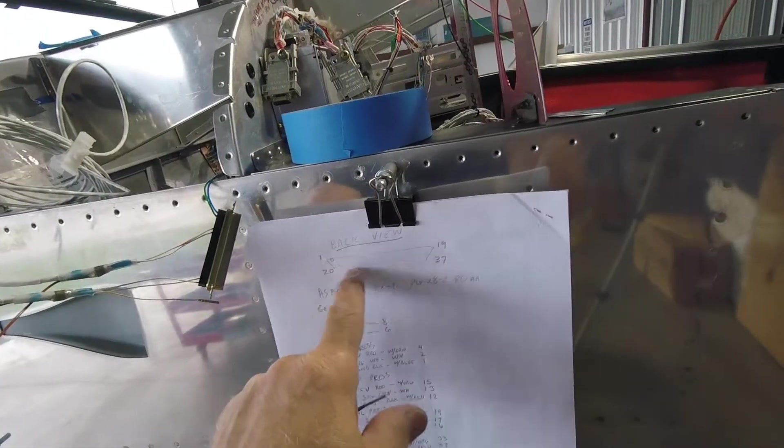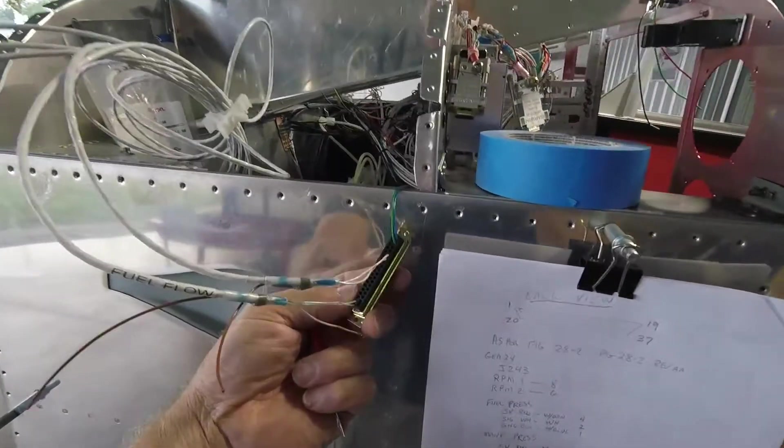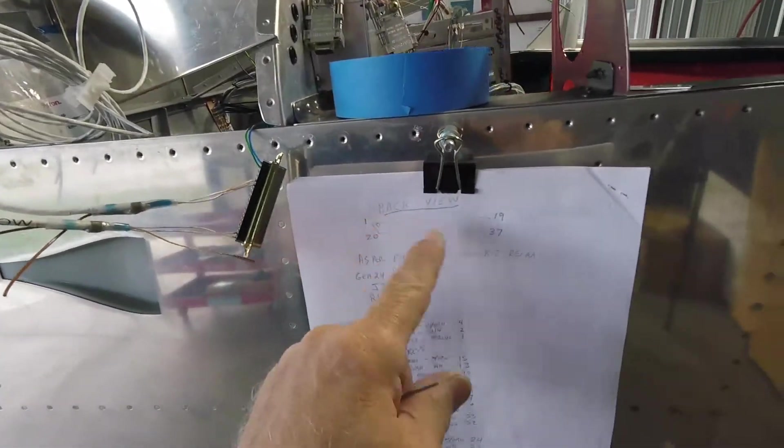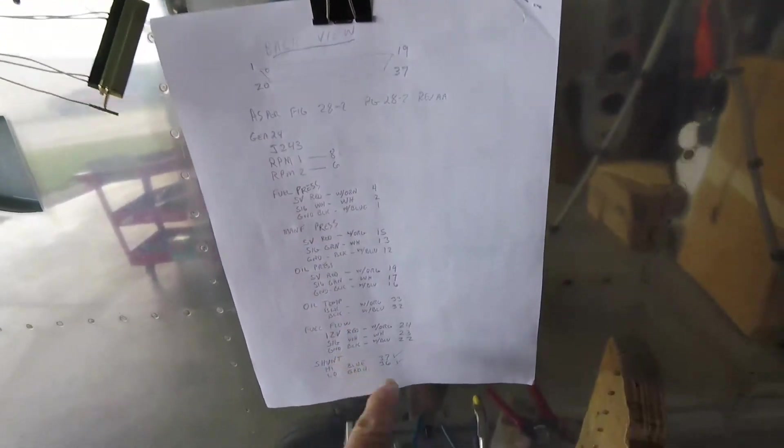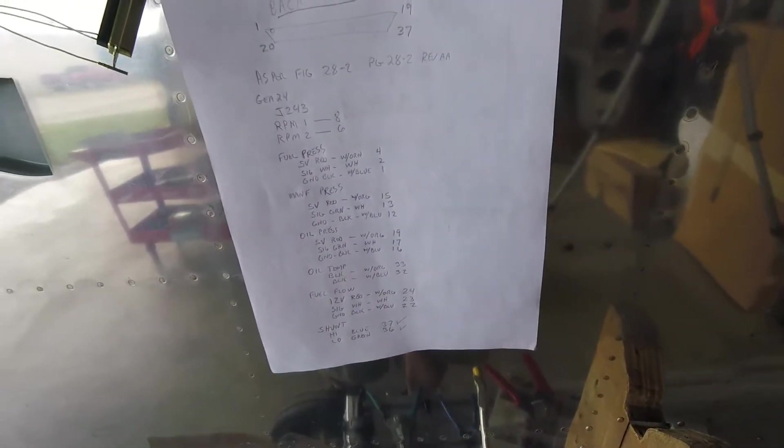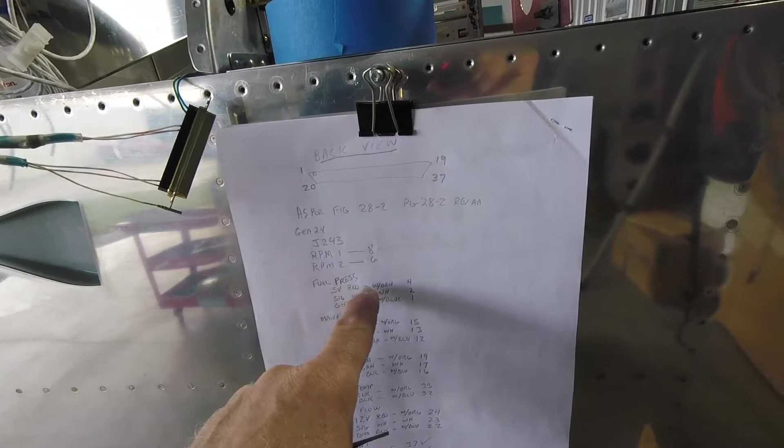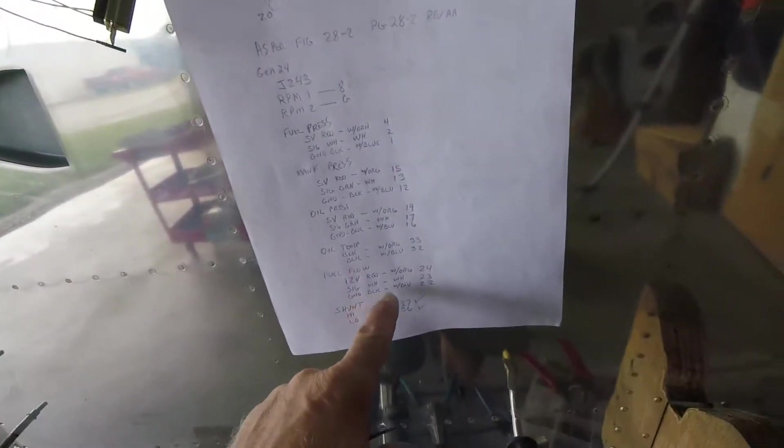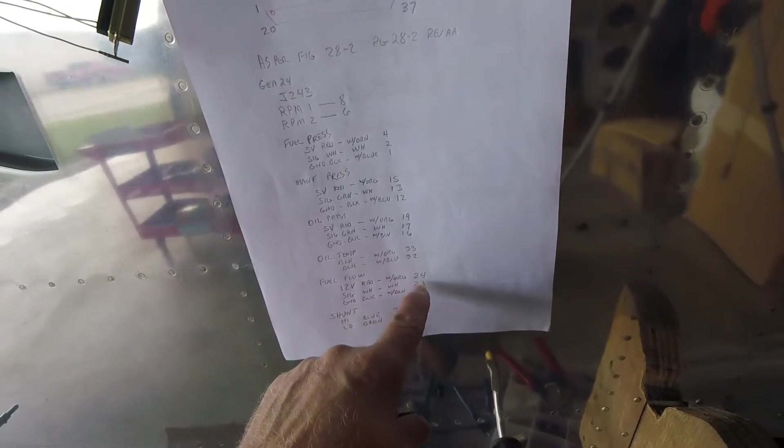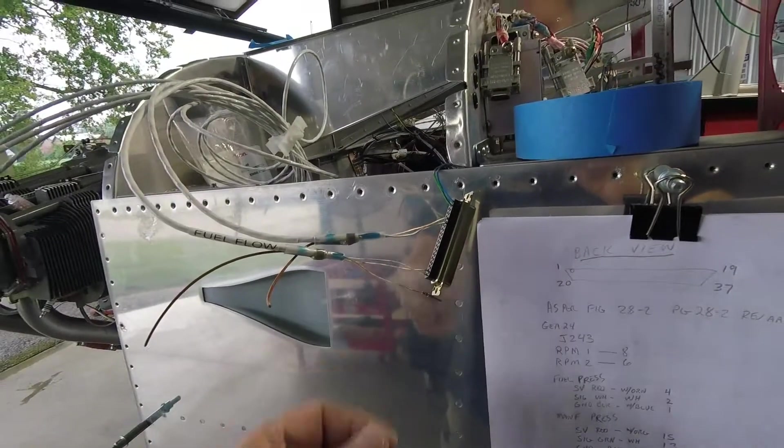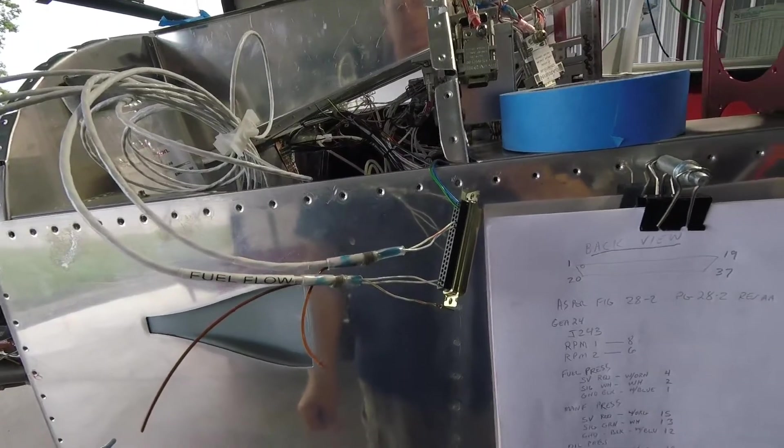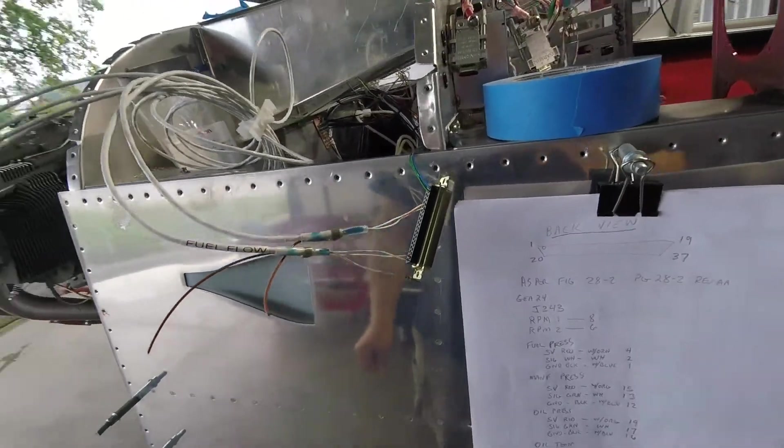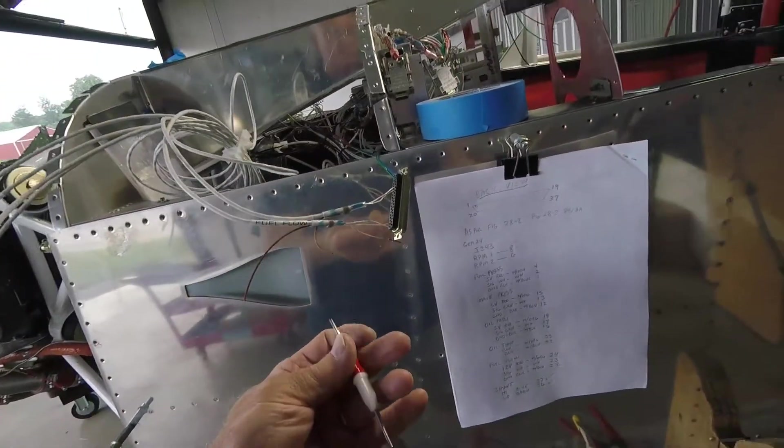I've got an illustration of the back view of this connector so I know what pins go in where. As I get them installed I check them off. Notice I didn't check this one off because I made a mistake. Fuel flow is supposed to be in pins 22, 23, and 24 and I already put them in 1, 2, and 4. So I'm going to show you how to remove them.